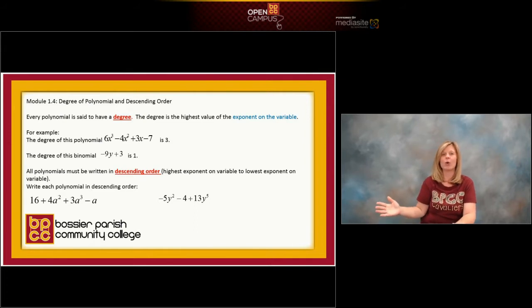If you look at the binomial, I have written -9y + 3. That is in the correct descending order. That exponent on the y is a one and then is followed by the three, the constant, which has no variable. That's very important. In our next video, we're actually going to learn how to rewrite our expressions in descending order.